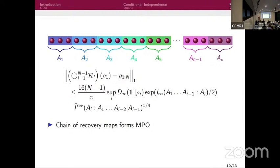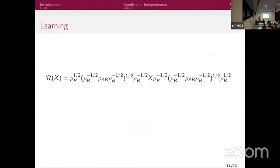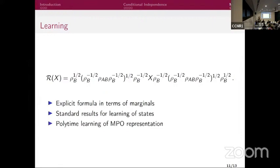The learning application is straightforward. The completely positive map consists entirely of local marginals, so we just perform local tomography on each piece. Each system size is at most logarithmic in the global system size, so any standard tomography result applies. Because the global system size does not enter the size of the marginals, we get polynomial time learning in inverse error and global system size, with explicit bounds on sample complexity and time complexity.